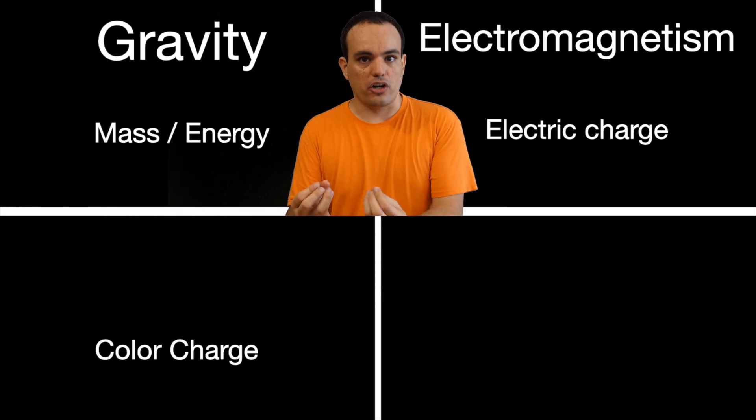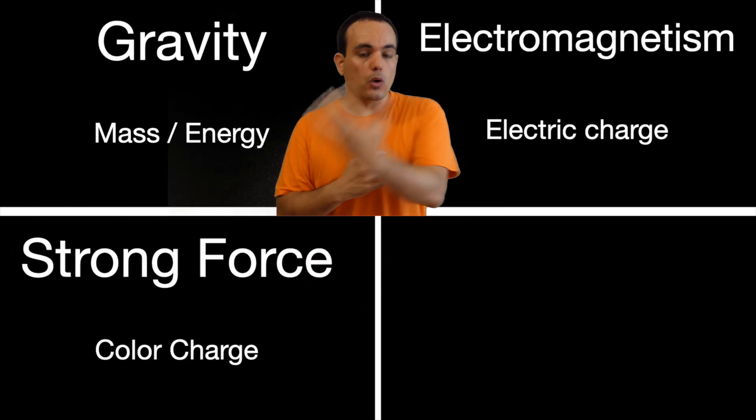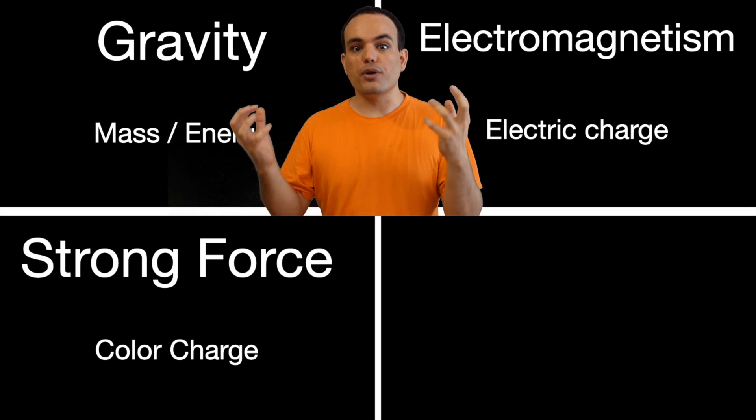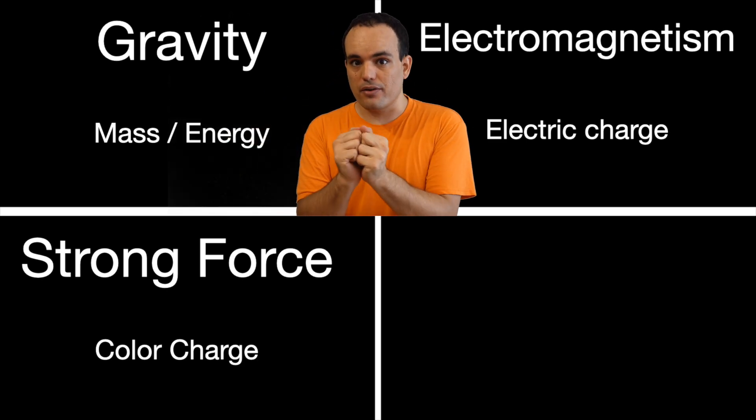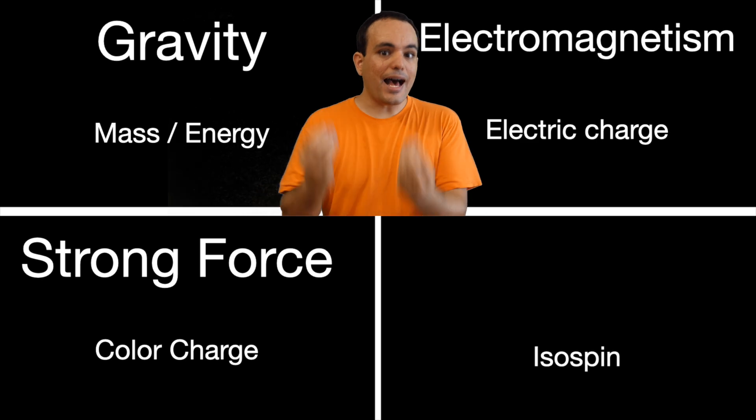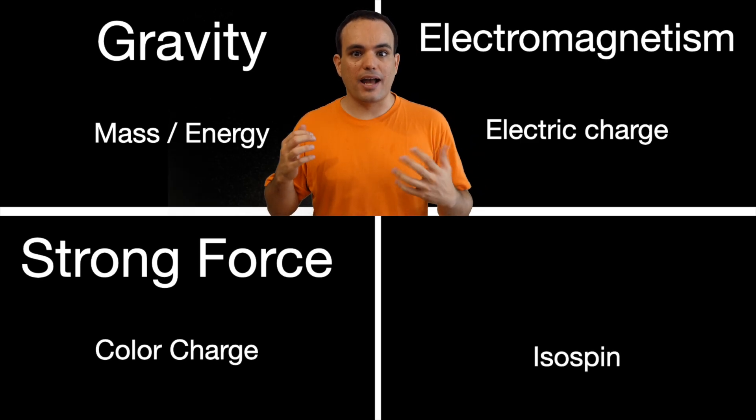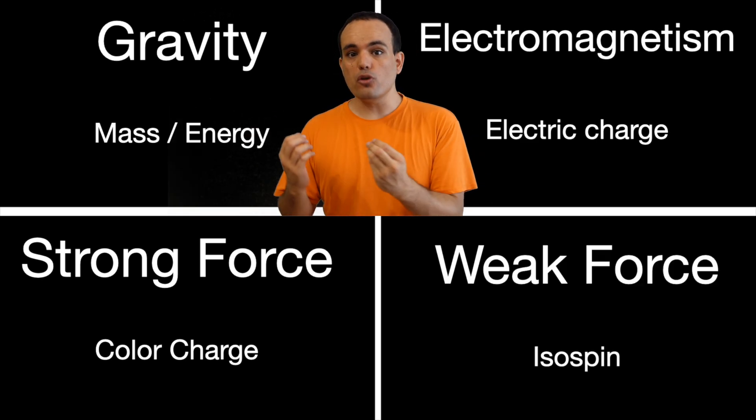One of them is color charge, that allows them to interact with a strong force, and this is responsible for keeping the nuclei of atoms together. And the other one is isospin, which allows them to interact with the weak force, and this is responsible for radioactivity. For the three forces we actually understand,